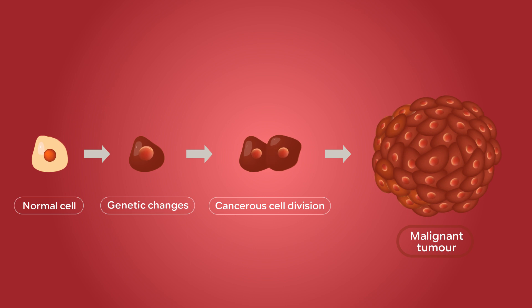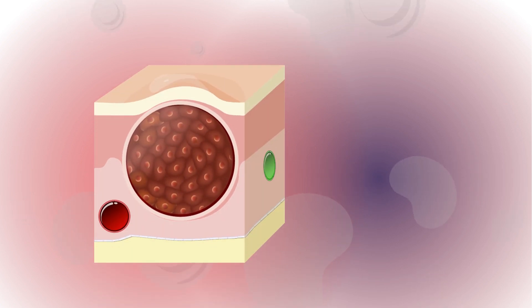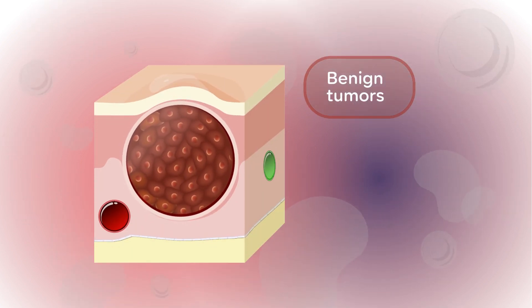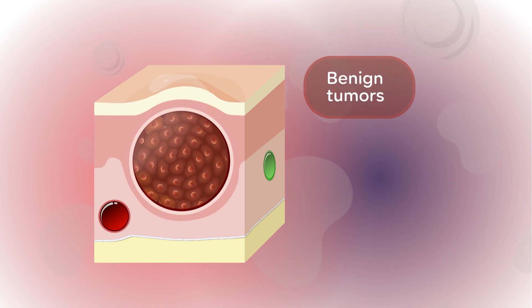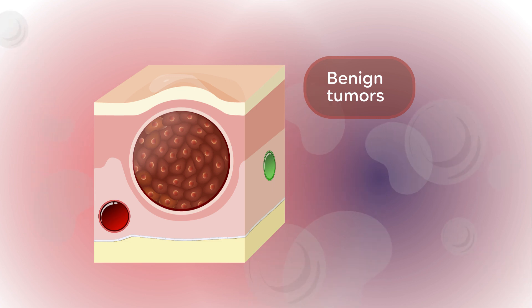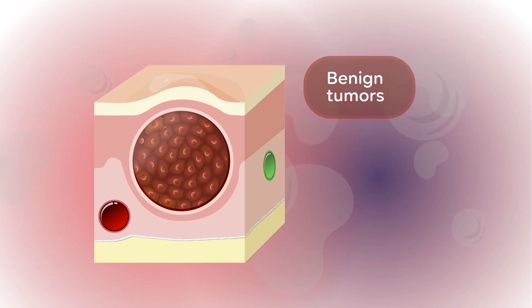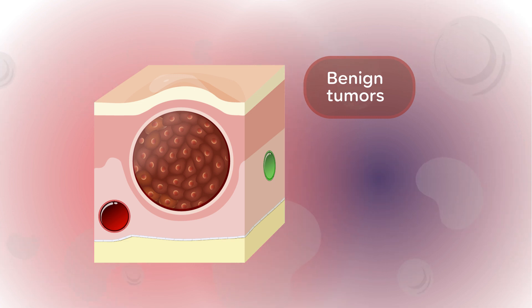Let's talk about the important difference between benign and malignant tumors. Benign tumors are not cancerous. They can grow quite large, but they do not spread to other parts of the body. Benign tumors can cause problems by pressing against nearby tissues and organs, sometimes causing pain or other complications. Examples include fibroids in the uterus or lipomas under the skin.